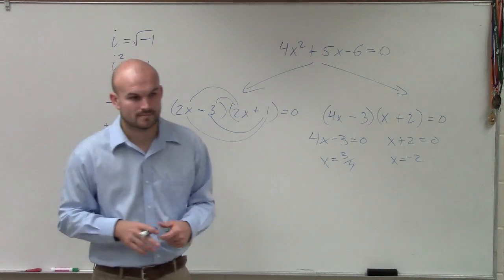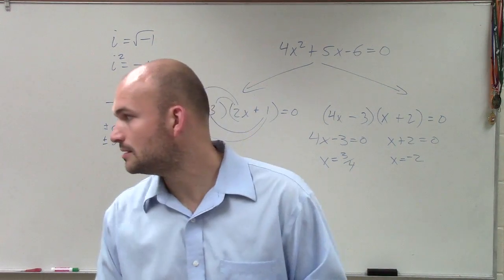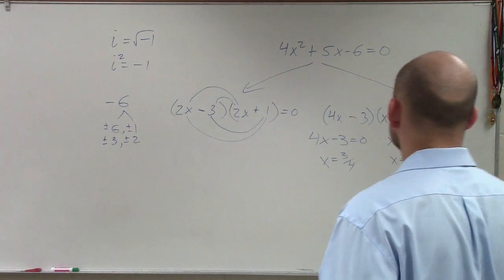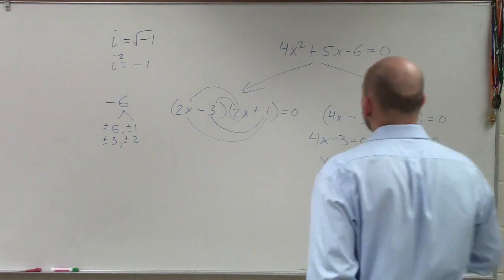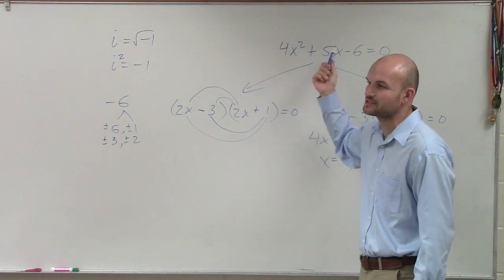I don't, I just want 4x and 4x. Yeah, that's going to be wrong, because 4x times 4x would give me 16x squared. So it'd have to be 4x and x.